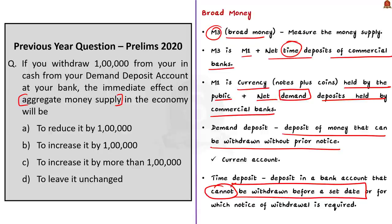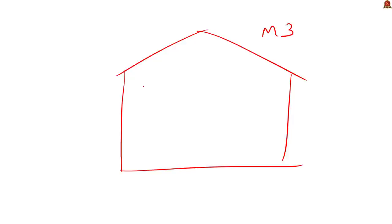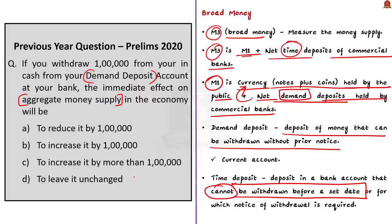Now let us apply the concept. Withdrawal of 1 lakh rupees in cash does not make any difference to the aggregate money supply — it will remain unchanged, since the money supply includes both cash with public and demand deposits. We are simply exchanging money within the parameters of M3: withdrawing from demand deposits and giving to currency held by the public. Think of M3 as a house with three people — currency held by public, demand deposits, and time deposits. Money moves between the first two, but the total inside the house stays the same. So M3 remains unchanged and the answer is D: to leave it unchanged.